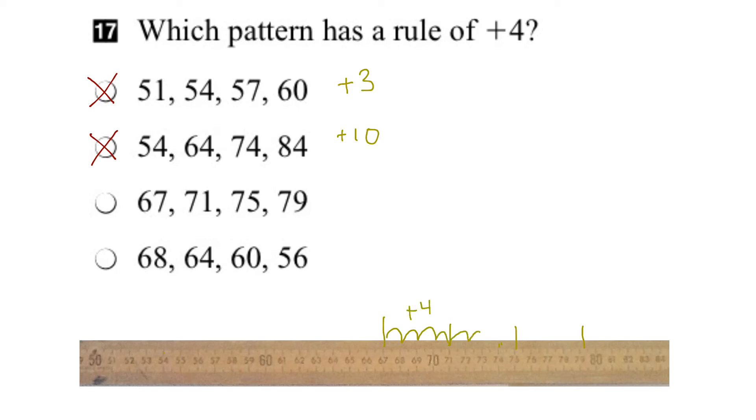Next one, 1, 2, 3, 4, plus 4. It's looking promising. 1, 2, 3, 4, yep. So for this one, the rule is plus 4, going up by 4 each time. And that's what we're looking for. So this is the right answer.